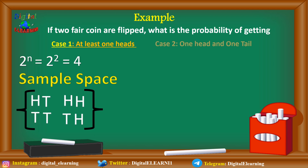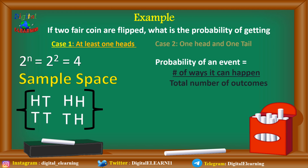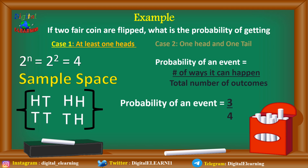The question asks for at least one head. Observing the sample space, three of the outcomes — HT, HH, and TH — contain at least one head. Applying the probability formula, the number of ways it can happen is 3, out of a total of 4 outcomes. So the probability is 3 divided by 4, which comes to 75 percent.